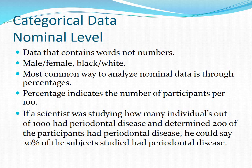The first of the categorical data to look at is the nominal level. Nominal level is data that contains words, not numbers. Some examples would be male, female, or black, white, when gathering information. The most common way to analyze nominal data is through percentages, which indicate the number of participants per 100. For example, if a scientist was studying how many individuals out of a thousand had periodontal disease, and 200 participants had periodontal disease, he could say that 20% of the subjects studied had periodontal disease.